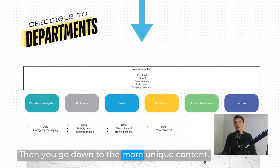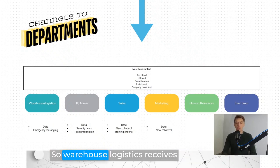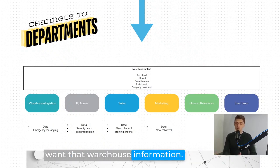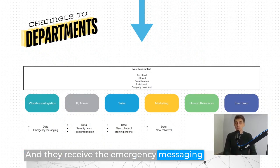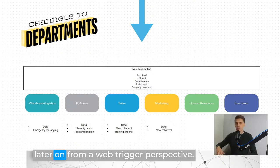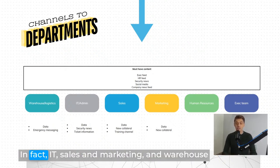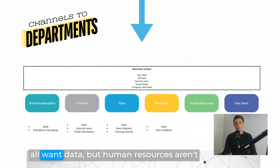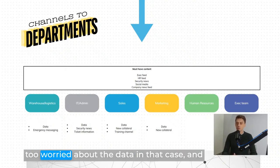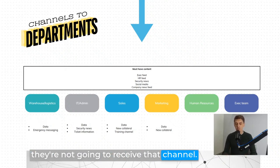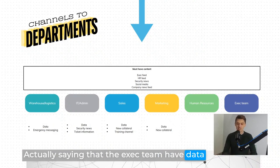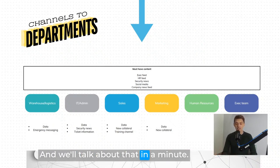The HR feed is non-negotiable — people need to know about new promotions, new hires, new policies. The security feed is vital: the IT team have mandated that so people know of any security incidences. Social media feed was decided to keep from a brand awareness perspective, and so was the company news feed. So now we've really boiled down the must-have content — each one just a single channel, managed by an individual, updating the playlist which knows which players it needs to go to.